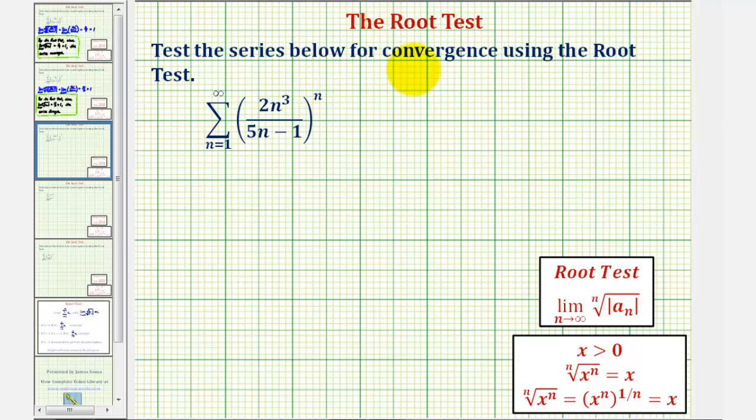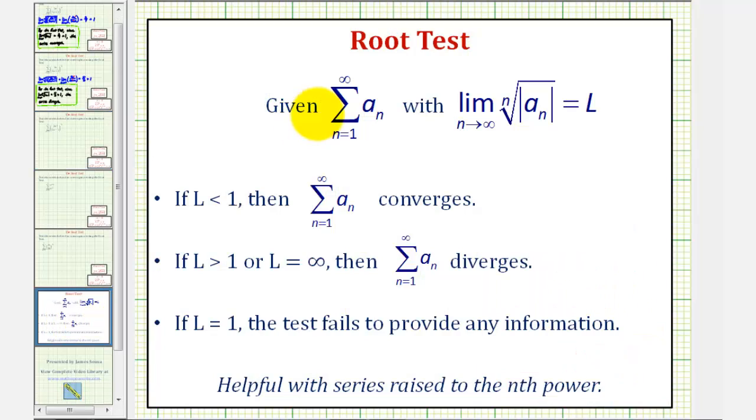We want to test the series for convergence using the root test. So to apply the root test, given the summation of a sub n, we take the limit as n approaches infinity of the nth root of the absolute value of a sub n, which will equal L. And based upon the value of the limit, this will tell us whether the series converges, whether the series diverges, or whether the test fails to provide any information.